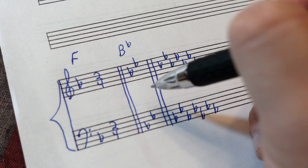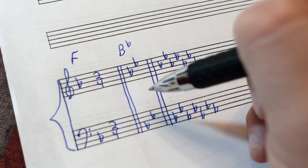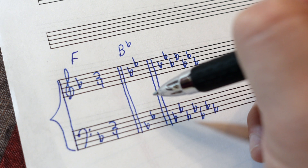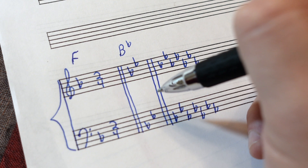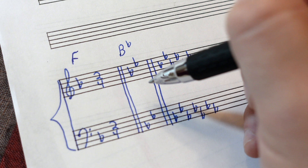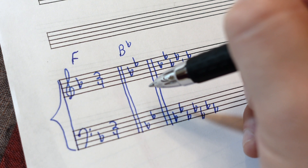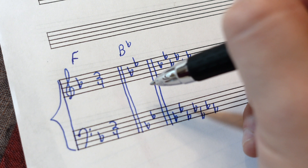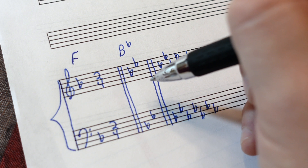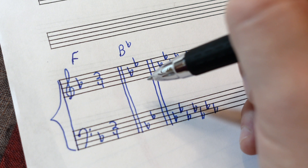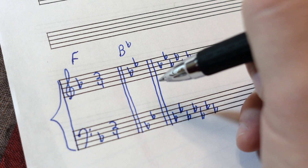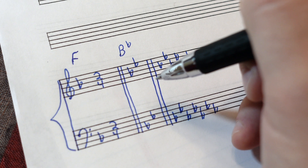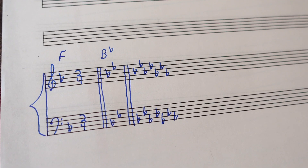Some people may ask why this is called the key of B flat rather than just the key of B. That's because when the actual key signature contains that letter — meaning B flat is one of the flats listed — you say this is the key of B flat. Keep that in mind when looking at other flat key signatures, and also for the sharp key signatures in the next video.